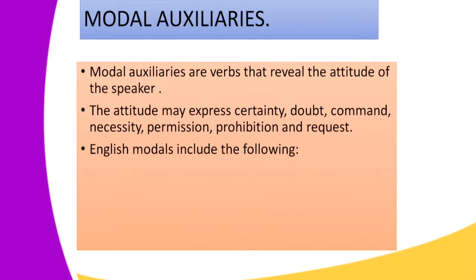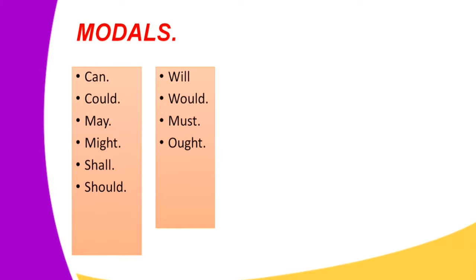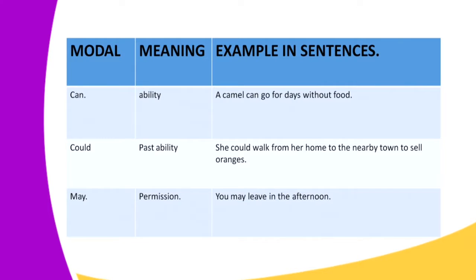English modals include the following: can, could, may, might, shall, should, will, would, must, and ought. We have a table showing us the modal, the meaning, and examples in sentences.